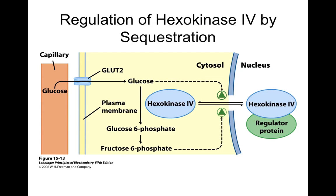Hexokinase 4, also known as glucokinase, can also be regulated, but in this case it's regulated by sequestration. We can take this hexokinase and place it inside the nucleus. If it's inside the nucleus, it's not available to work on the glycolytic pathway. Glucose enters through GLUT2 and can be made into fructose-6-phosphate for glycolysis; however, hexokinase 4 can be removed via a regulator protein when there are high levels of glucose or fructose-6-phosphate.